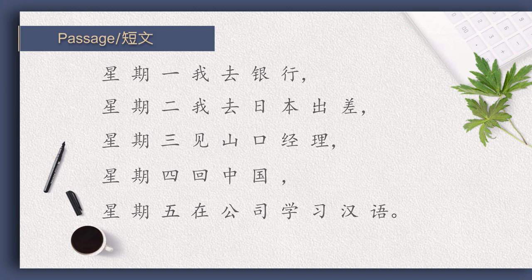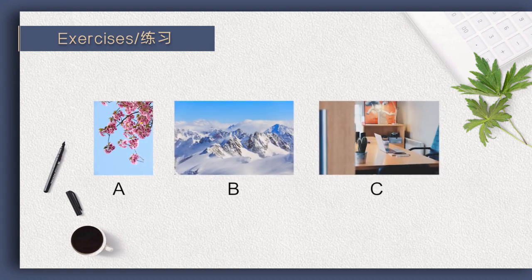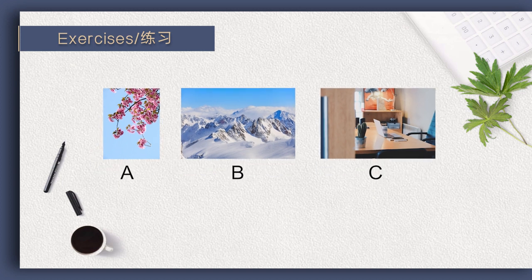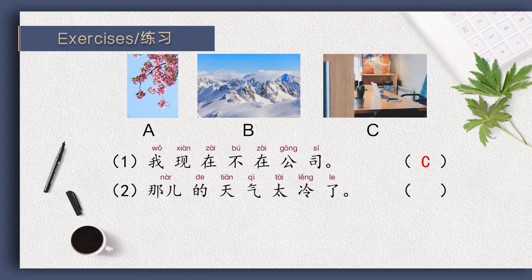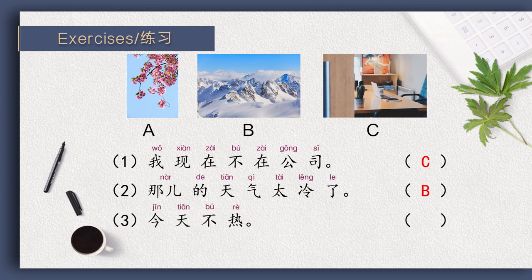Good job! Let's do some exercises. Please listen and choose the appropriate pictures. 我现在不在公司。 那儿的天气太冷了。 今天不热。 The first one: 我现在不在公司 — we should choose C. The second one: 那儿的天气太冷了 — the right answer is B. The third one: 今天不热 — A is correct. Did you get the right answers?